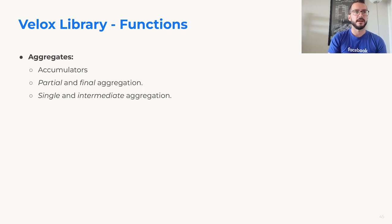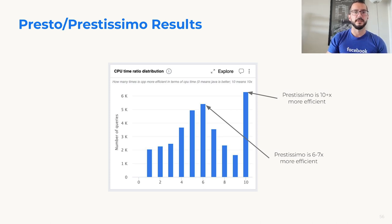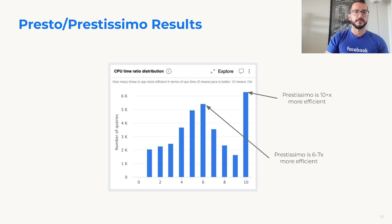Velox also provides APIs for specifying aggregates — you can define accumulators and specify partial, final, single, and intermediate aggregations, which can be mixed and matched by engines depending on data processing needs. As a quick experiment with Prestissimo — the project integrating Velox inside Presto — we shadowed one of the internal Meta workloads on a traditional PrestoDB using the Java execution engine and compared it with the new Prestissimo cluster using the Velox expression evaluation. This shows a histogram of how many times the C++ execution was faster in CPU time. The middle bar shows many queries were 6-7x more efficient, and many queries are actually 10x or more efficient than the old Java codebase. There are also results on the Spark integration and machine learning integrations in the paper.